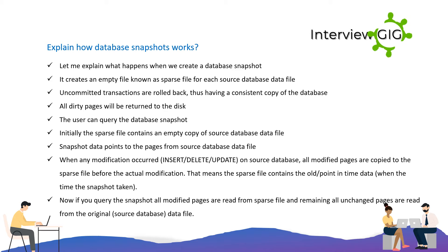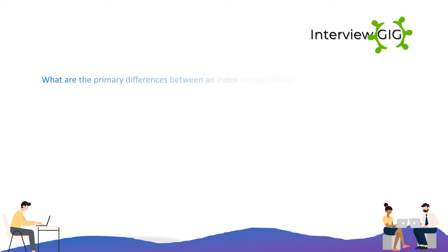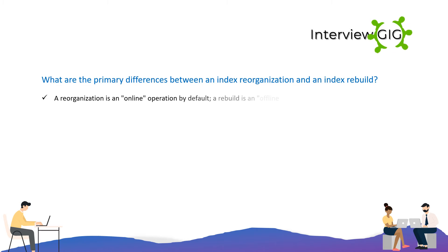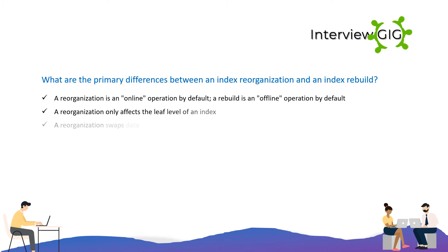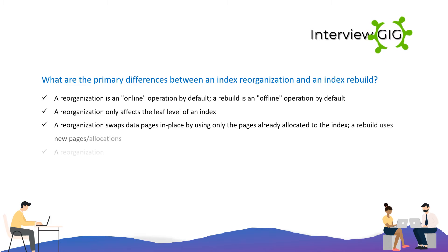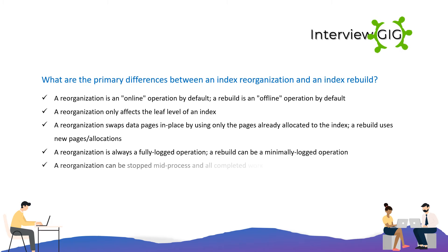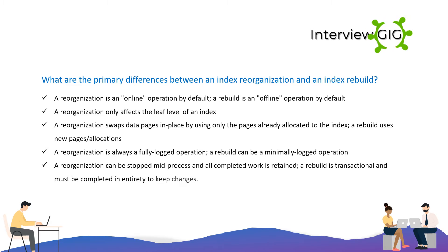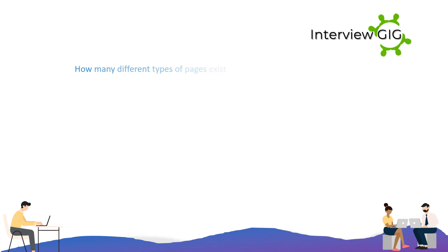When querying a snapshot, all modified pages are read from the sparse file and all unchanged pages are read from the original source database. Regarding index reorganization vs. rebuild: a reorganization is an online operation by default; a rebuild is offline by default. Reorganization only affects the leaf level of an index and swaps data pages in place. A rebuild uses new page allocations. Reorganization is always fully logged; a rebuild can be minimally logged. Reorganization can be stopped mid-process retaining completed work; a rebuild must complete in its entirety.